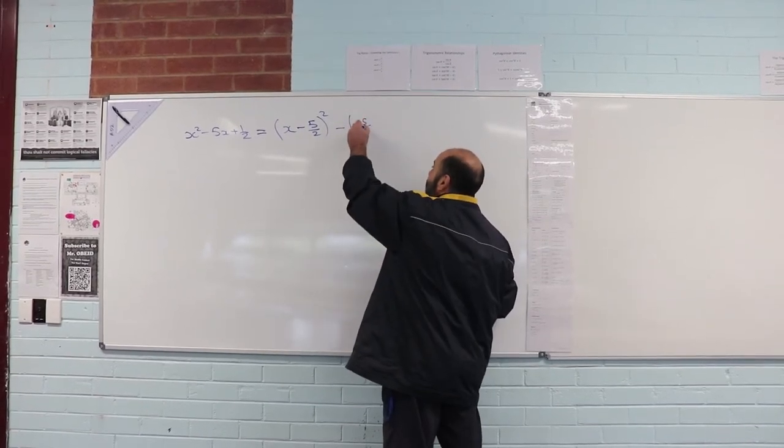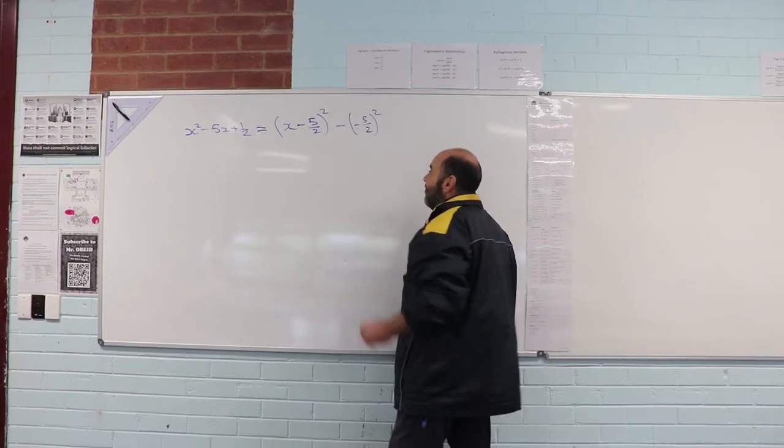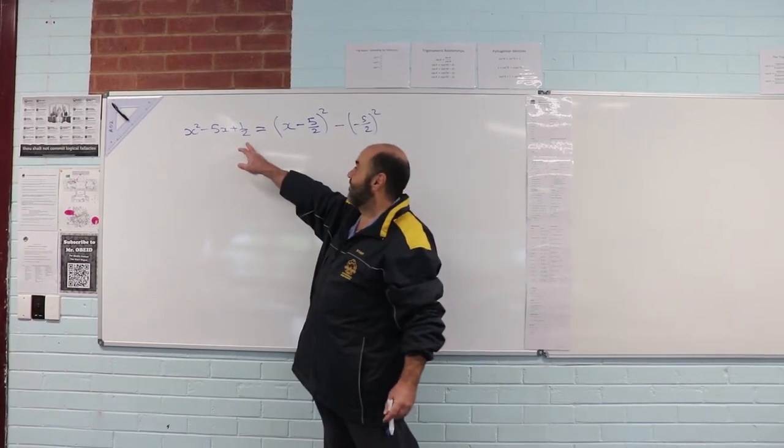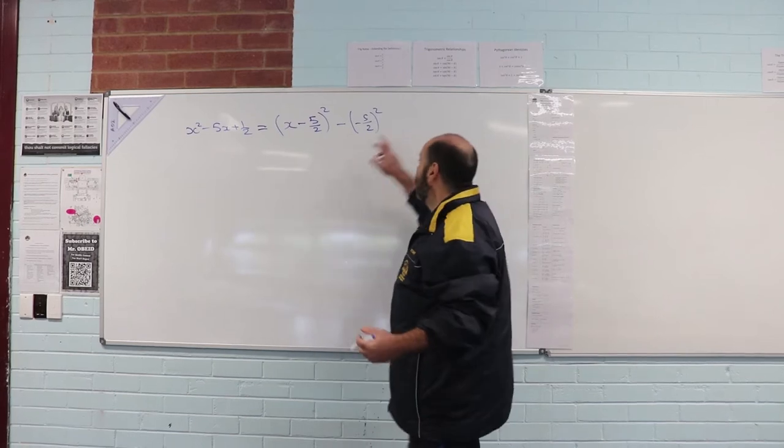So -5/2 squared. And of course I've still got that +1/2, so that's still going to stick around. So here that is.